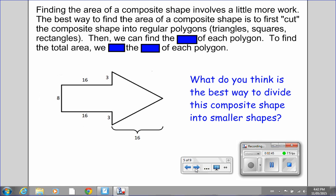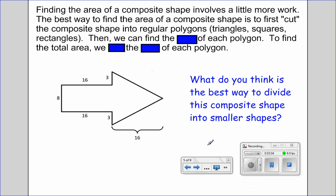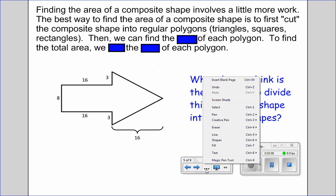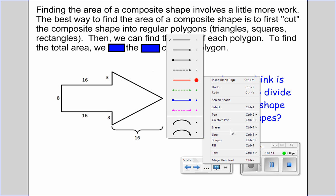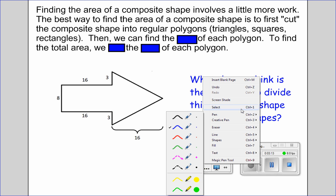Finding the area of a composite shape involves a little more work. The best way to find the area of a composite shape is to first cut the composite shape into regular polygons - triangles, squares, rectangles. Then we can find the blank of each polygon. To find the total area, we add the blank of each polygon.